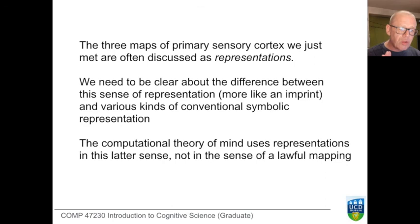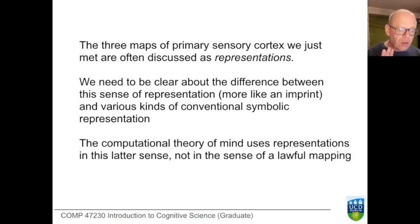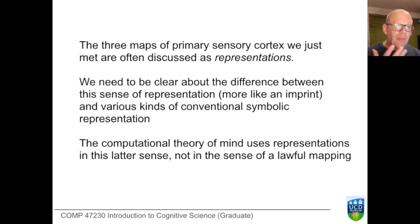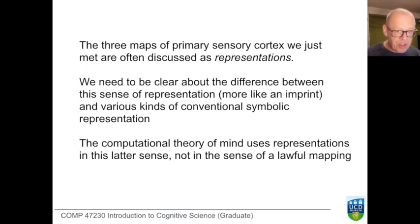The cortical maps we saw are not beholden to any computational theory of mind — they are, as I said, more like imprints. But the computational theory of mind takes the notion of representation a lot further and uses more conventional ideas of the relationship between a representation and the thing it is about. So we'll get into that.